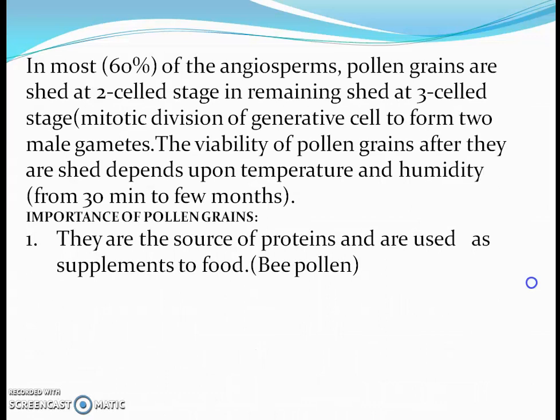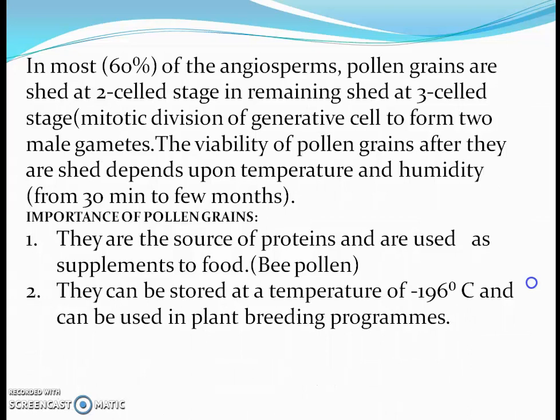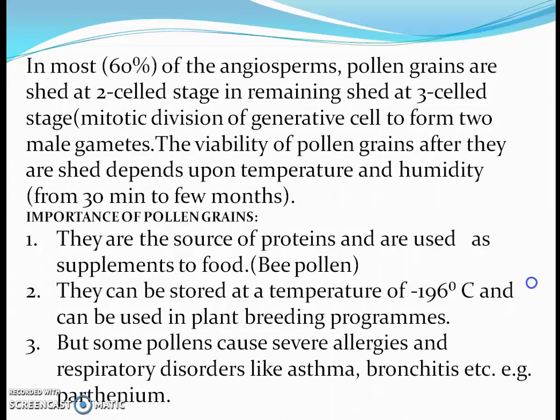In most angiosperms — about 60 percent — the pollen grains are shed at the two-cell stage. In the remaining, they are shed at the three-cell stage. In the three-cell stage, mitotic division of the generative cell takes place and it forms two male gametes. In the two-cell stage, there is only one vegetative cell and one generative cell. The viability of pollen grains after they are shed depends on temperature and humidity, and differs from 30 minutes to a few months.